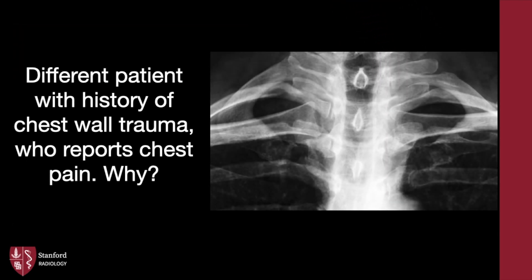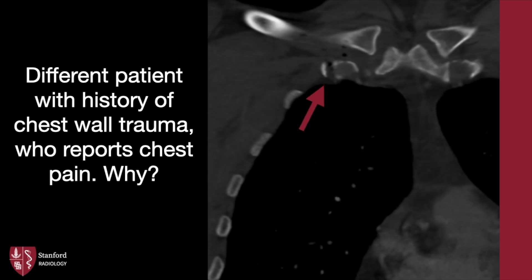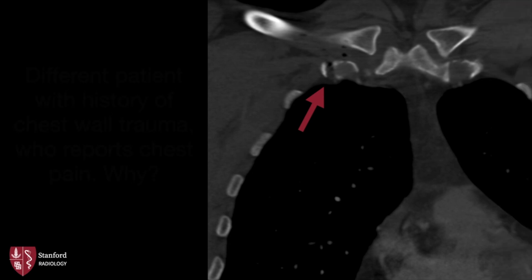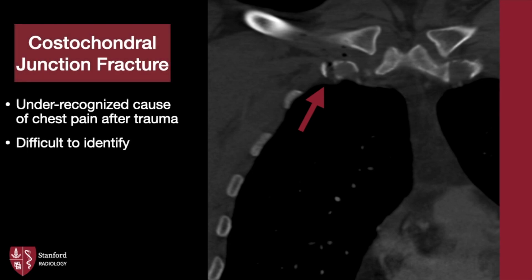This is a different patient, also with history of chest wall trauma and now with chest pain. Our zoomed-in frontal radiograph is not too revealing. A follow-up CT reveals the answer: this is a costochondral junction fracture of the right first rib. Note how there are foci of gas tracking into this region. It is a commonly unrecognized cause of pain after trauma, as this area may appear very heterogeneous, especially in elderly individuals.